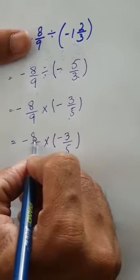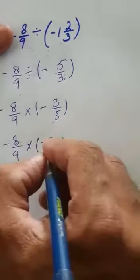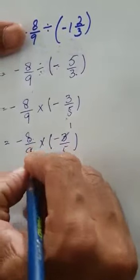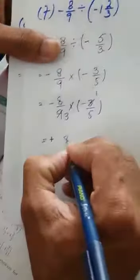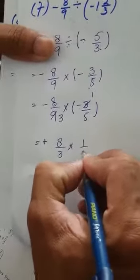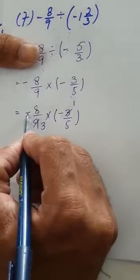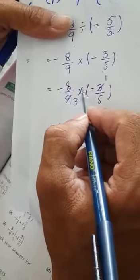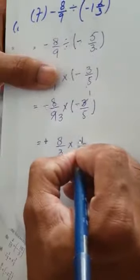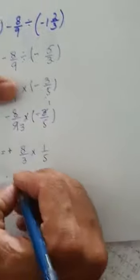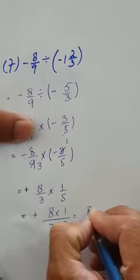As you can see, 5 and 8 cannot be cancelled since one is odd and one is even. Let's try 3 and 9: 3 threes are 9. Now, minus multiplied by minus gives plus. So we have 8 over 3 multiplied by 1 over 5. Since both negative signs are multiplied, the result is positive. Multiplying: 8 into 1 over 3 into 5 equals 8 over 15.